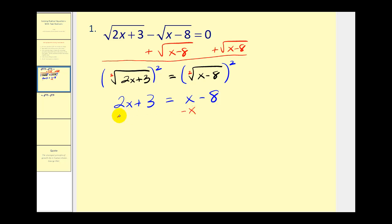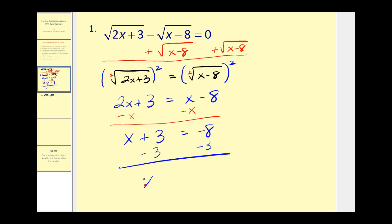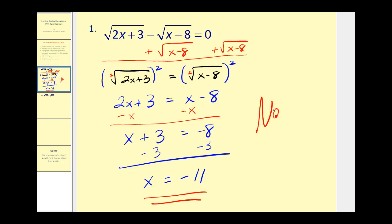We'll subtract x on both sides, giving us x plus three equals negative eight. We'll subtract three on both sides, giving us x equals negative 11. This is not looking very good because if we replace x with negative 11, we'll have two times negative 11, which is negative 22 plus three. The square root of negative 18 is not real, therefore it can't be a solution. So this equation has no solution — this is one of those extraneous solutions. Let's go ahead and try another.